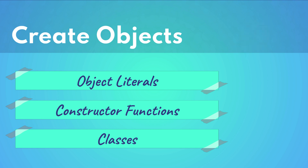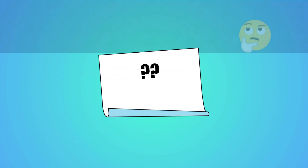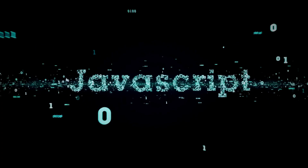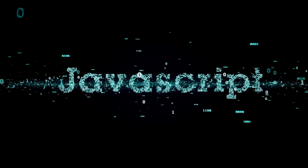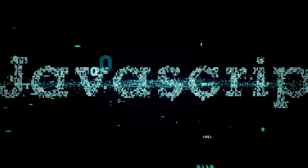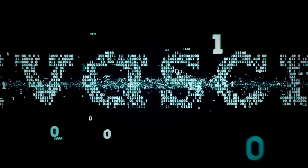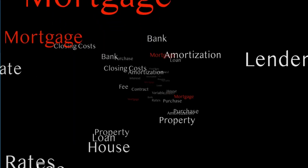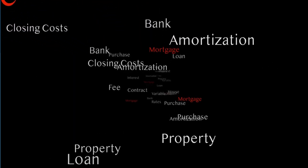Let's start with how we can create objects using object literals. But before we do that, let's understand what an object is. You may be familiar already with simple variables in JavaScript, like strings, numbers, and booleans. These are very simple data types that you can store using variables in JavaScript.